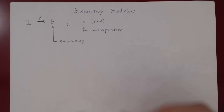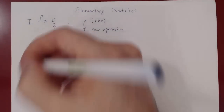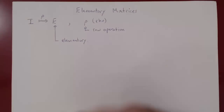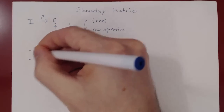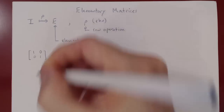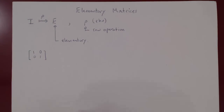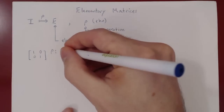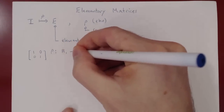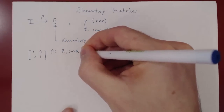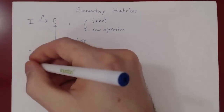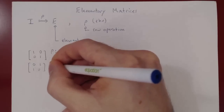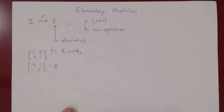Let's look at an example. Suppose you take a 2×2 identity matrix: [1, 0; 0, 1]. What's the first type of row operation? We can say that we interchange row 1 with row 2. So we apply to I a single row operation, and it becomes [0, 1; 1, 0]. And this is now E — an elementary matrix.